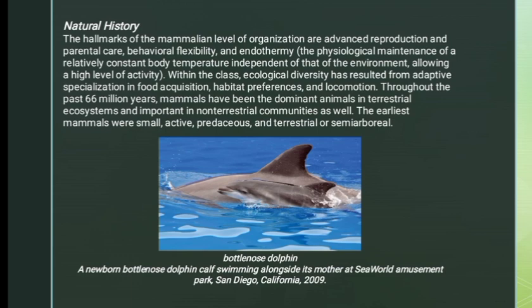Throughout the past 66 million years, mammals have been dominant animals in terrestrial ecosystems and important in non-terrestrial communities as well. The earliest mammals were small, active, predaceous, and terrestrial or semi-arboreal.